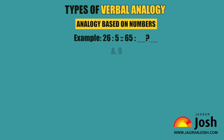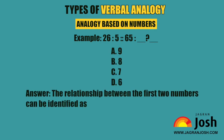The options are a. 9, b. 8, c. 7, d. 6. The answer is: the relationship between the first two numbers can be identified as each letter corresponding to its numerical position.